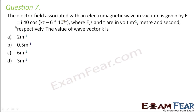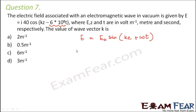Question number 7: The electric field associated with an electromagnetic wave in vacuum is given by E = 40î cos(kz − 6 × 10⁸ t), where E, z, and t are in volt per meter, meter, and second respectively. The value of wave vector k is to be found. The general expression for the electric field is E = E₀ sin(kz + ωt). Comparing with the given expression, the value of ω is 6 × 10⁸. We know that ω = 2πν, so 2πν = 6 × 10⁸.